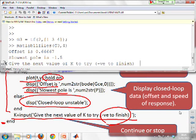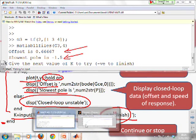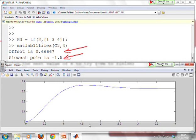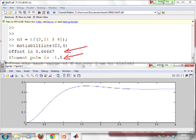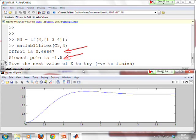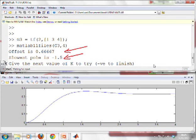I press that and it tells me the current offset is 0.6667 and the slowest pole is -1.5. It defaults to k=1 in the first loop. It's also produced a figure showing what's going on, then asks what value of k to try next.